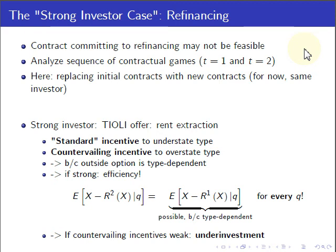In such a case, we have a standard screening game where the privately informed party — the owner-manager — must choose a contract from what the investor offers. The investor will try to extract as much information rent from the privately informed owner-manager as possible. What is different in our game compared to similar screening games is that we have two types of incentives: on the one hand, there is the standard incentive for the owner-manager to understate his type, and on the other hand, there is a countervailing incentive to overstate his type.